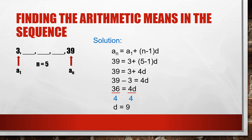We add 9 after the 3: 3 plus 9 is 12, and 12 plus 9 is 21, and 21 plus 9 is 30. So the arithmetic means in the sequence are 12, 21, and 30.